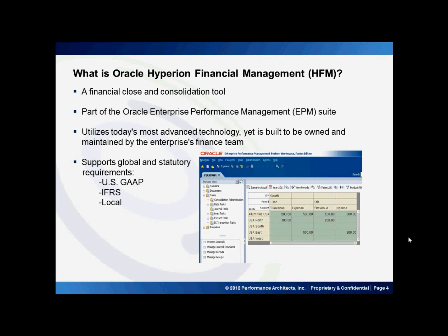Our next topic is: what is Oracle Hyperion Financial Management? HFM is a financial close and consolidation tool — a comprehensive web-based application that delivers global financial consolidation, reporting, and analysis in a single, highly scalable software solution. HFM is a part of the Oracle EPM Suite or the Enterprise Performance Management Suite. Examples of other applications in this suite are Oracle Hyperion Planning, Strategic Finance, and Performance Scorecard.